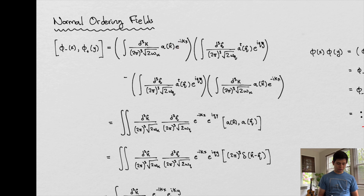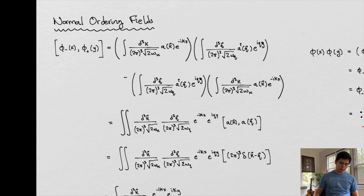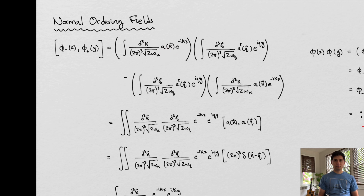The other part of this field is e to the positive ikx. In this example, we have q as a different form of momentum for the particle we're interested in. The minus sign refers to the minus sign on the exponential here, and the positive sign refers to the positive on the exponential. The minus sign correlates with our annihilation operators, and the positive sign correlates with our creation operators.